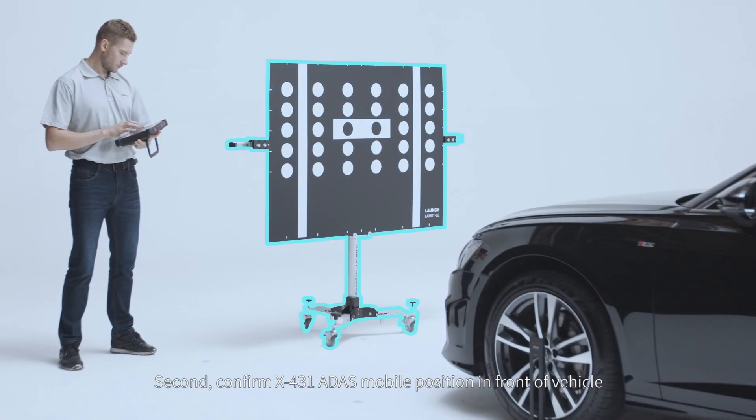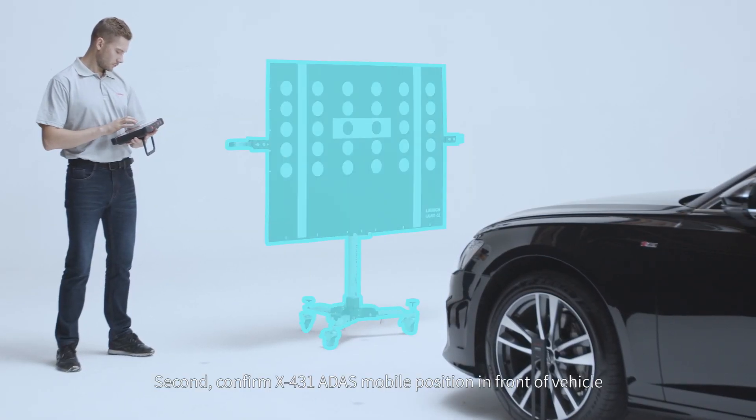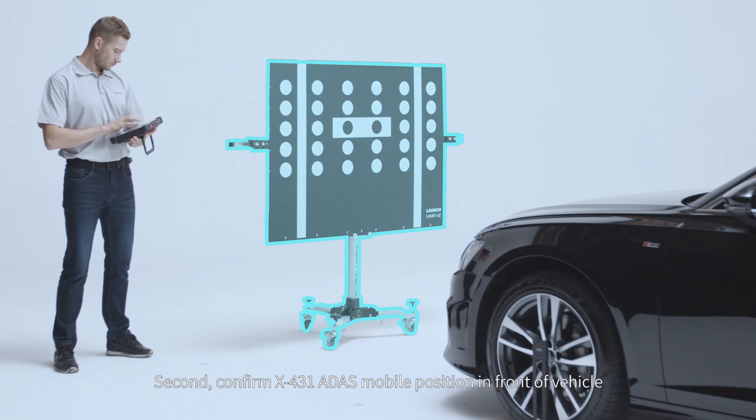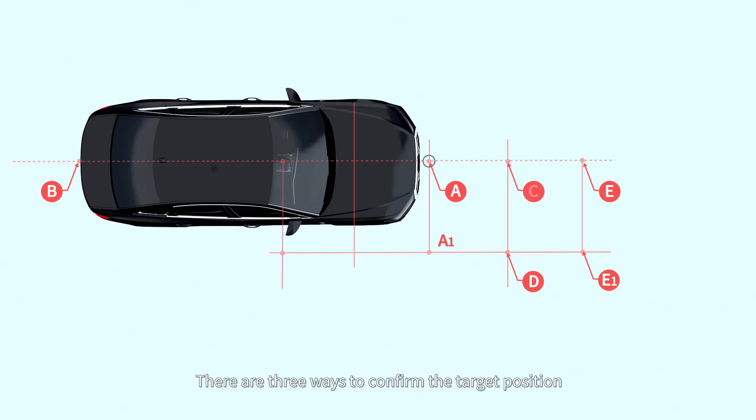Second, confirm X431 ADAS Mobile position in front of vehicle. There are three ways to confirm the target position according to different vehicle models. Measuring from the target to the front bumper. Measuring from the target to the front hub center. And measuring from the target to front camera. In this video, we will showcase the second way.